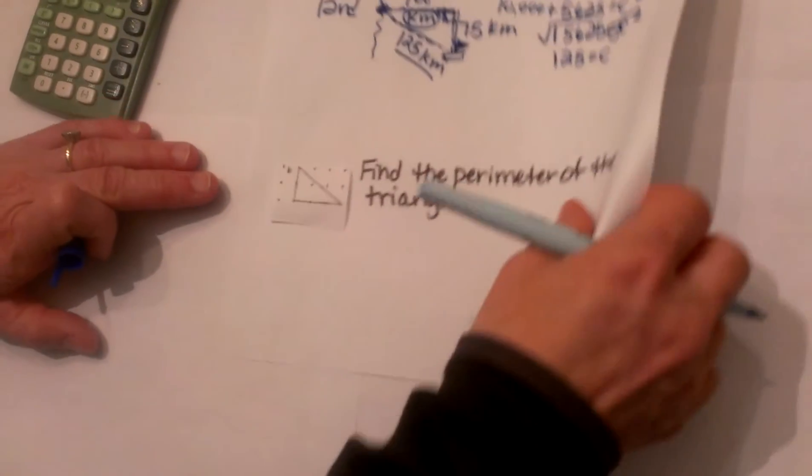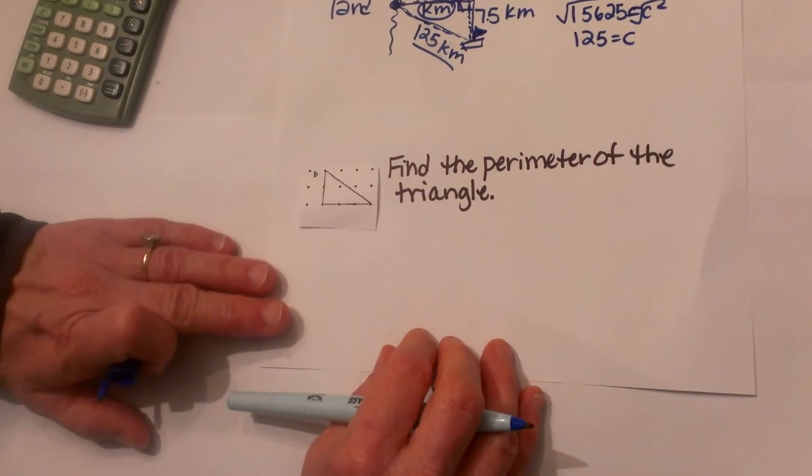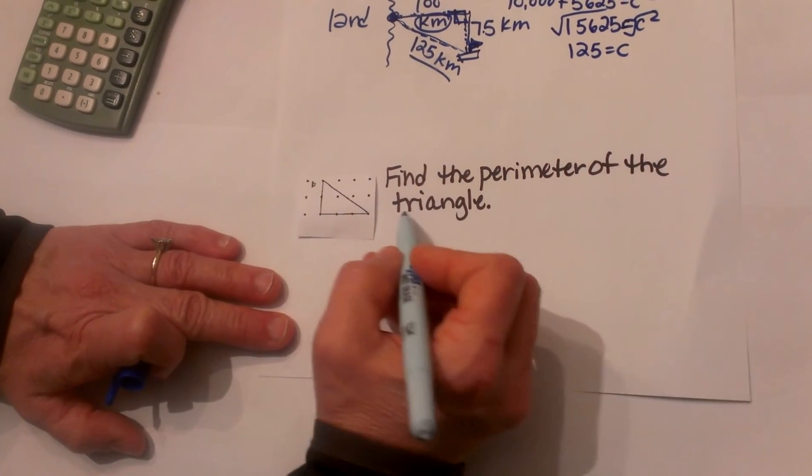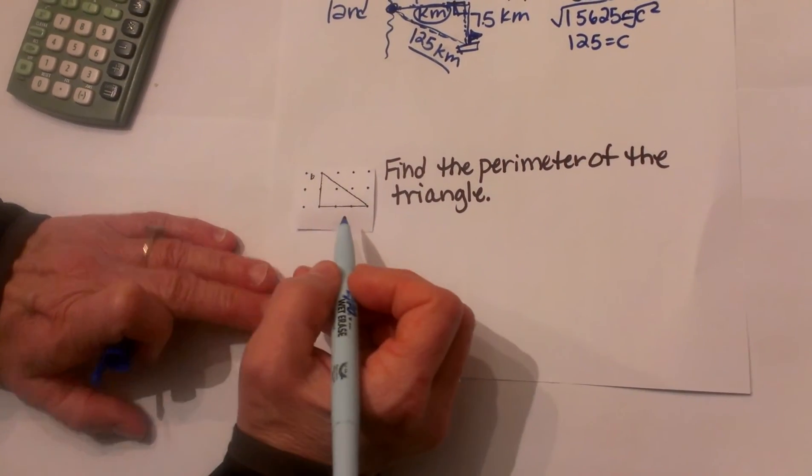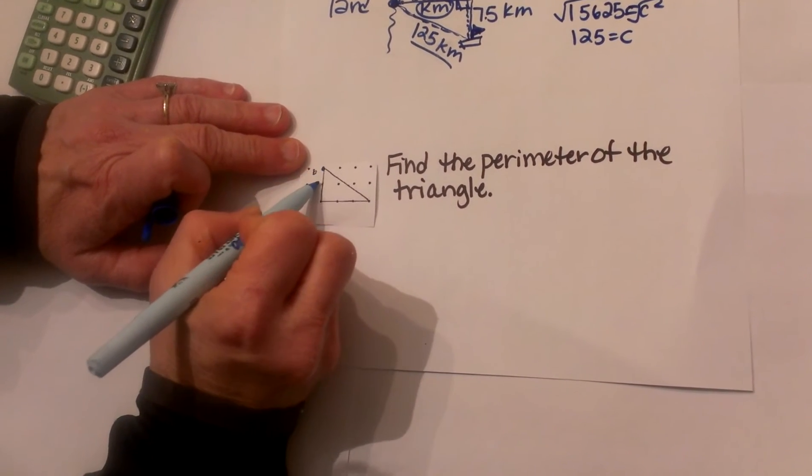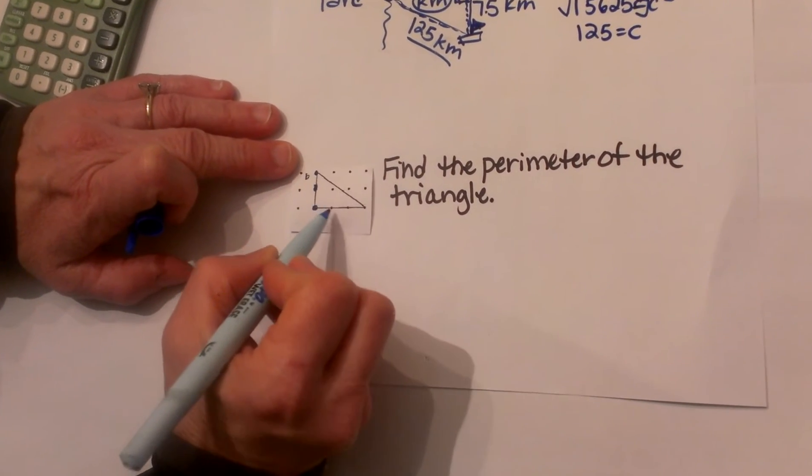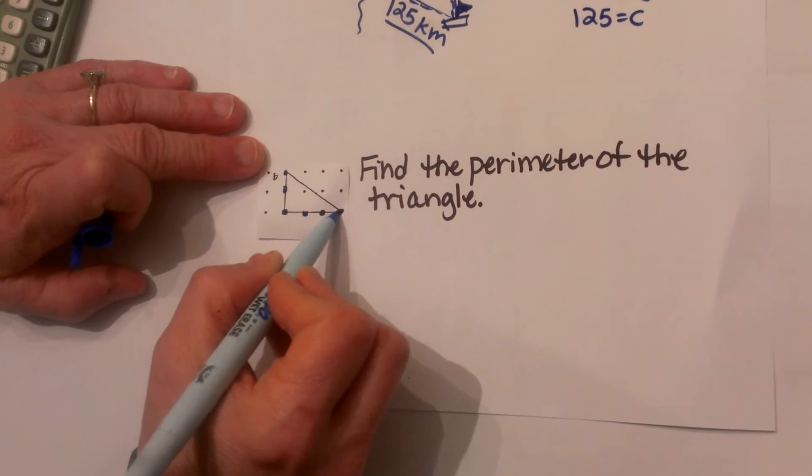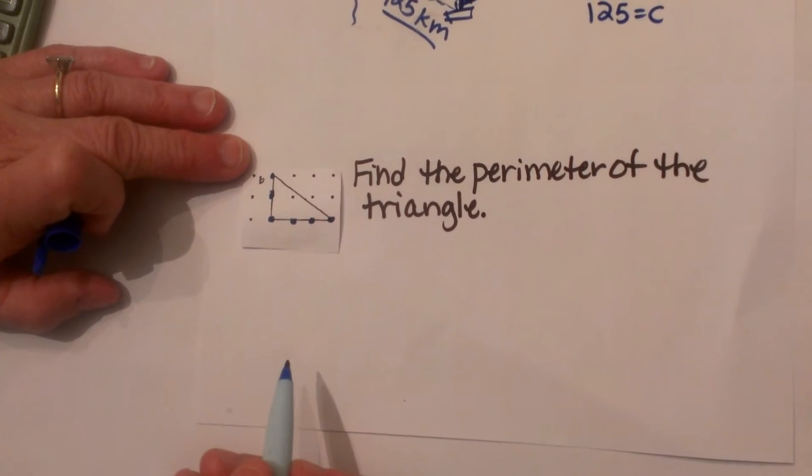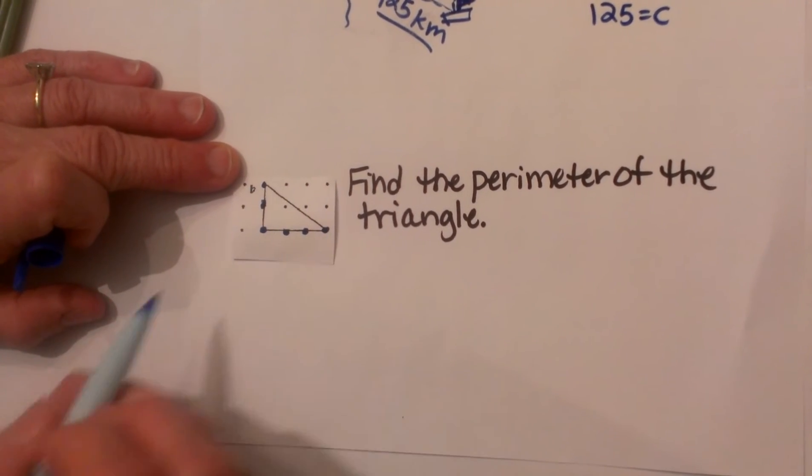Now let's look at the second problem. On this one we have to find the perimeter of a triangle. We are given a grid where we have got some points on the grid, and I will darken those so you can see them a little bit better on the video. Now let's look at the length of each side of this triangle.